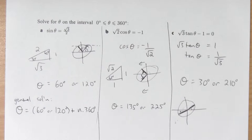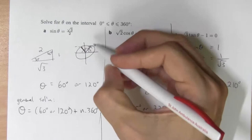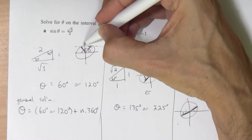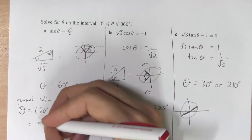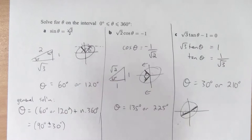And I can actually be a little bit more clever again. To get 60 or 120, I could have gone to the 90 and gone 30 degrees either way. Alternative general solution would be 90 plus or minus 30 plus some number of 360s.